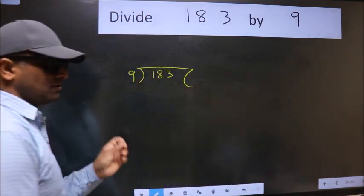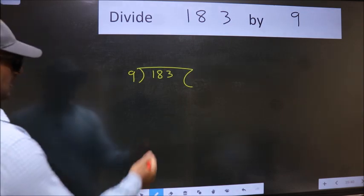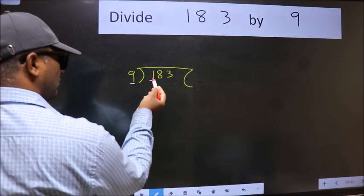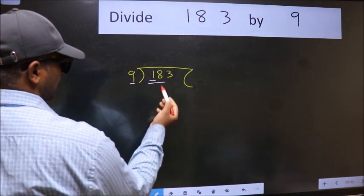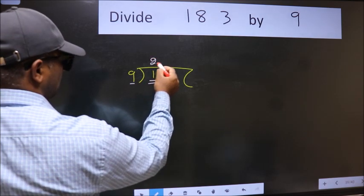This is your step 1. Next, here we have 1 and here 9. 1 is smaller than 9, so take two numbers, 18. When do we get 18 in 9 table? 9 to 18.